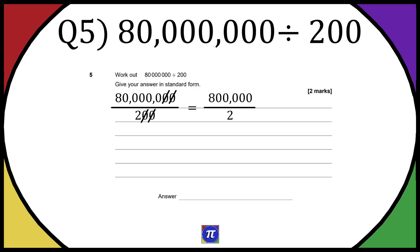So that's going to be 800,000 divided by 2. Now 800,000 divided by 2 is just 400,000. You just take that 8 and divide it by 2.